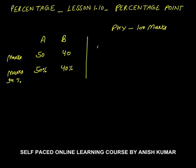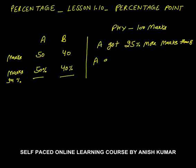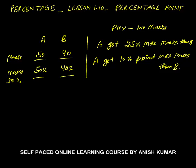and the other term is percentage point. Now, A got how much percent more marks than B? It means 50 is how much percent more than 40? That is 10 by 40 into 100 = 25%. So A got 25% more marks than B. But if I want to say the difference of percentage, I will say A got 10 percentage point more marks than B. The difference between two percentages is called percentage points. We use percent whenever two numbers are there; we use percentage points whenever two percentages are there.